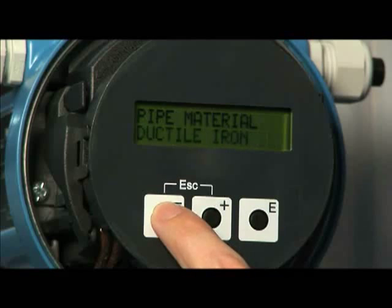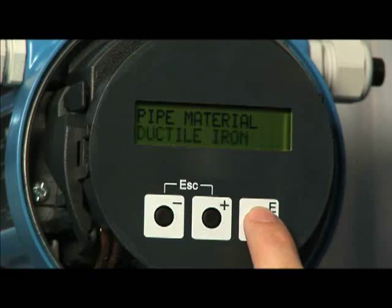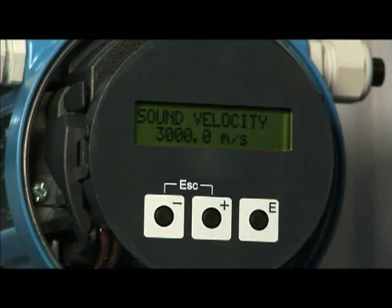The material of the pipe in which the liquid is being conveyed should then be entered. Select the appropriate material. The sound velocity of the pipe is then displayed.